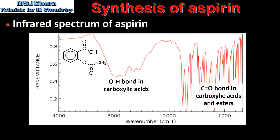Next we'll compare the infrared spectra of aspirin and salicylic acid, starting with aspirin. From this spectrum we can identify an OH bond in carboxylic acids, which corresponds to this OH bond here. The two peaks here correspond to the carbon-to-oxygen double bond in carboxylic acids and esters — one C=O in the carboxyl group and one C=O in the ester group.